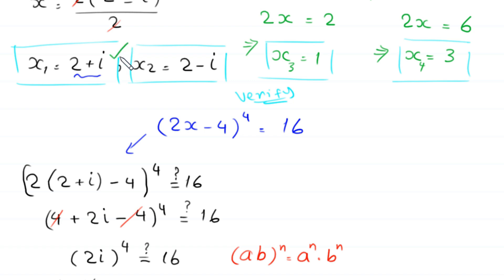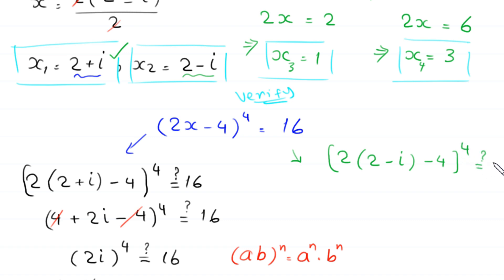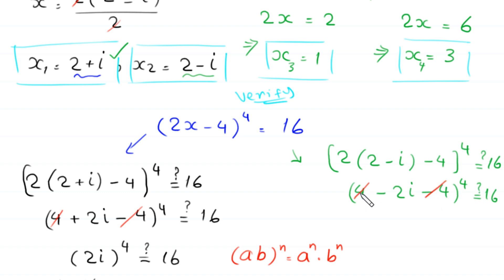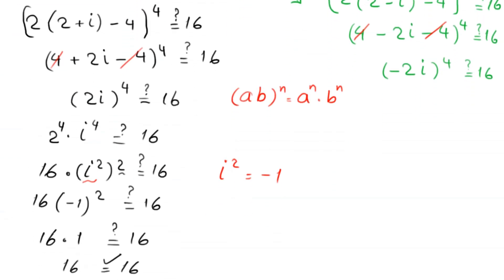When x equals 2 minus i, the equation becomes (2 times (2 minus i) minus 4) to the power 4. The 2 times 2 gives 4 and the negative 4 cancels, leaving (negative 2i) to the power 4. Is it equal to 16?